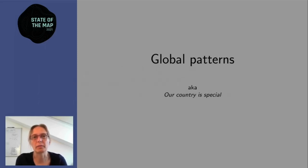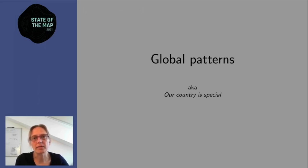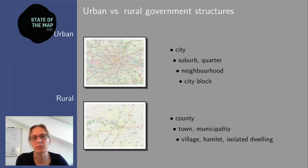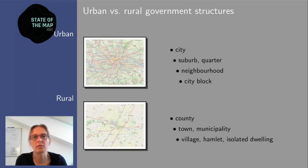Admin levels and place nodes are a little messy in the OSM database, but that's because reality is messy. Often local mappers say 'our country is special,' but if you look in detail, global patterns emerge. The first global pattern is urban versus rural structures. Every country has big cities with administrative structures like cities, suburbs, neighborhoods, and city blocks, while the countryside goes from country, county, to towns, villages, and maybe isolated dwellings and farms.